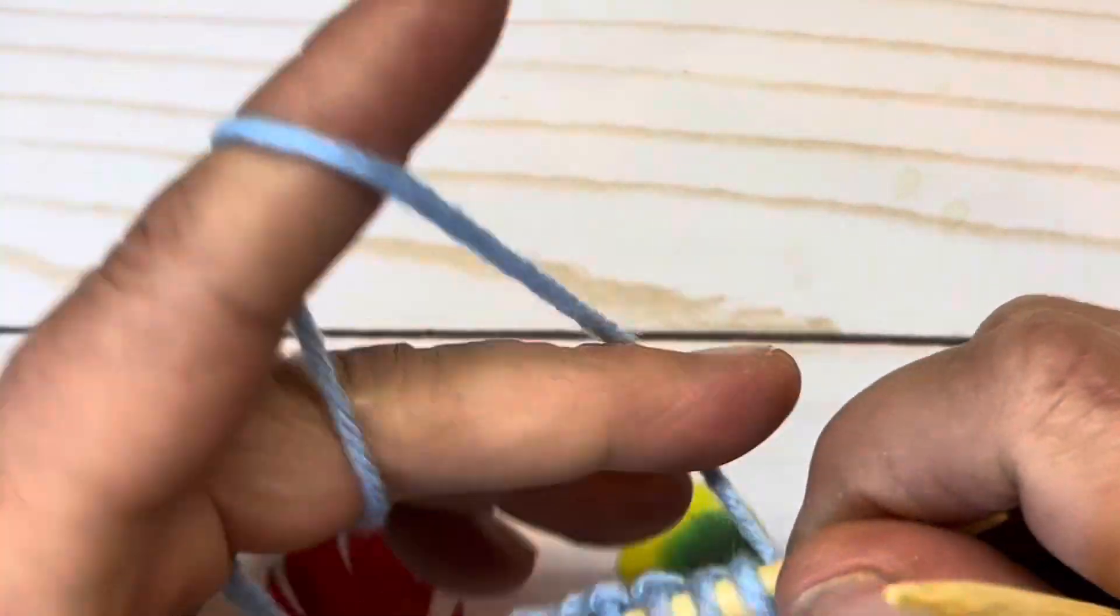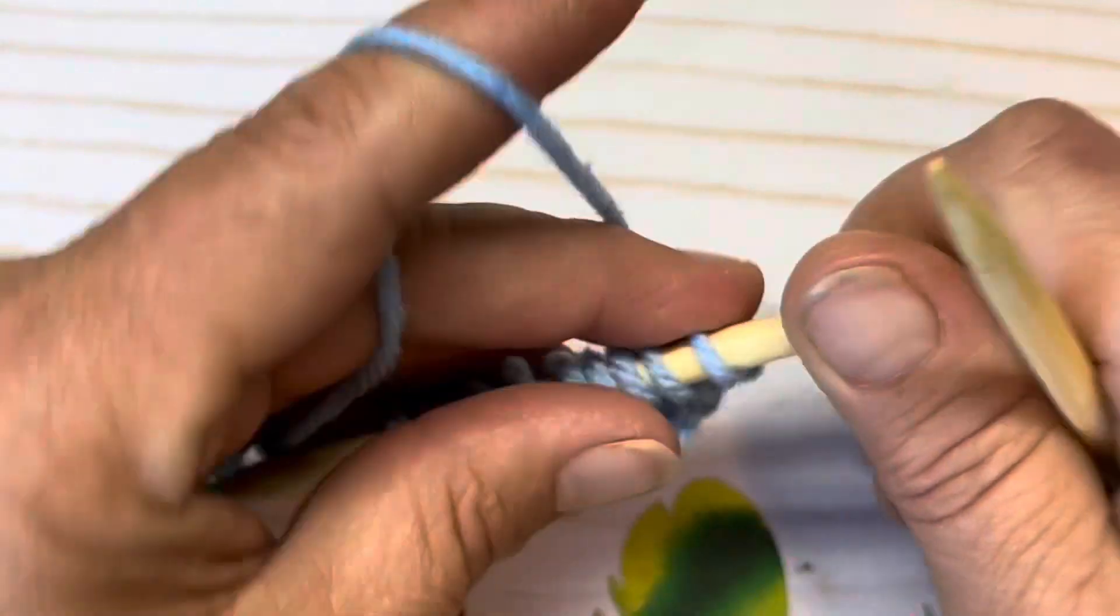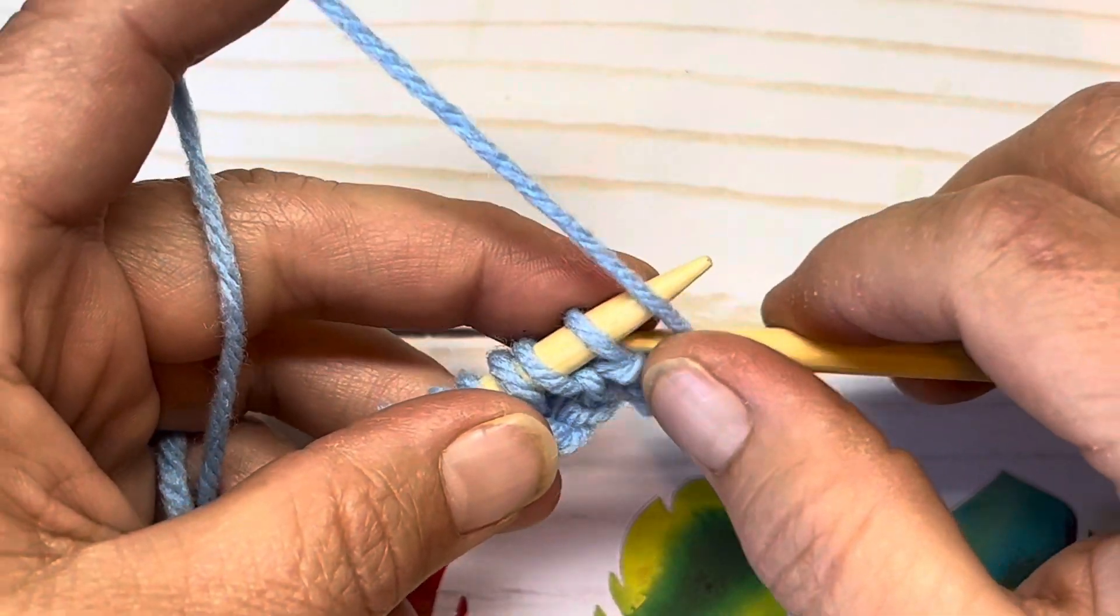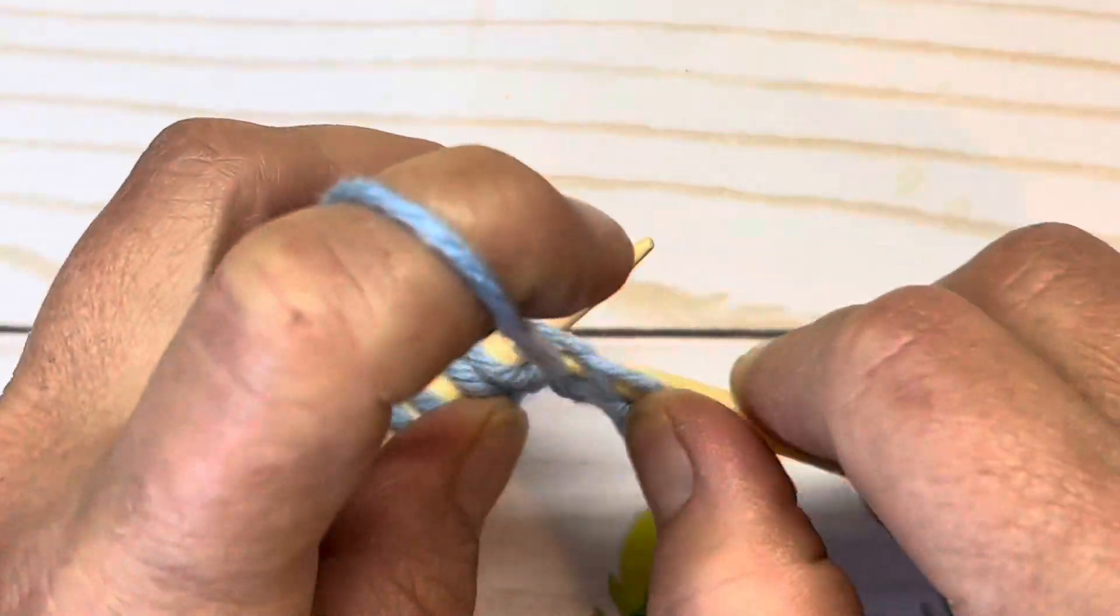Now we're going to begin on the right side of our work with row one. With row one, we're going to bring our yarn to the front and purl our first stitch.